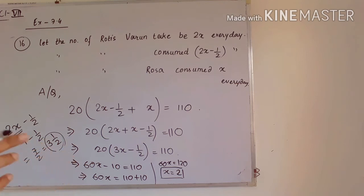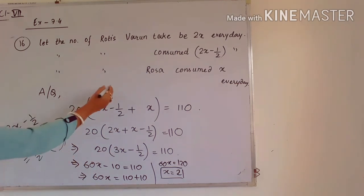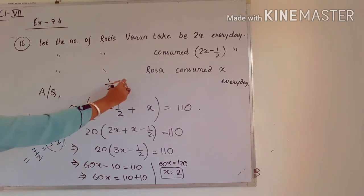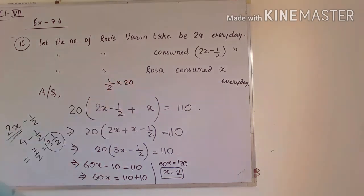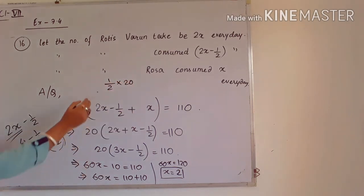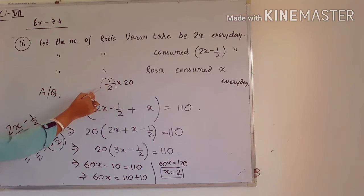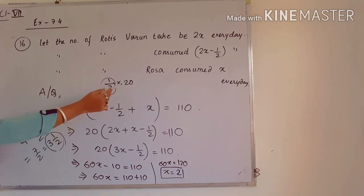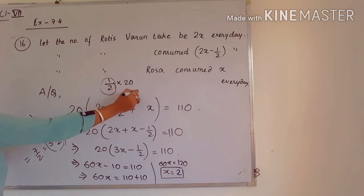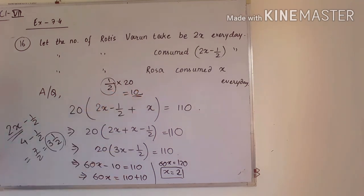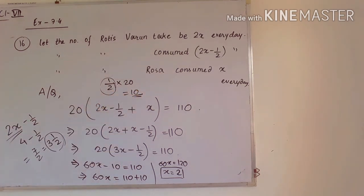How many rotis are wasted? It is given that half a roti is wasted every day. So in 20 days, we multiply half with 20: half into 20 equals 10. So 10 rotis are wasted in 20 days.